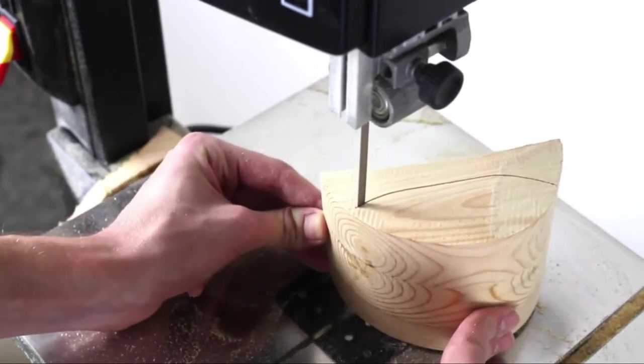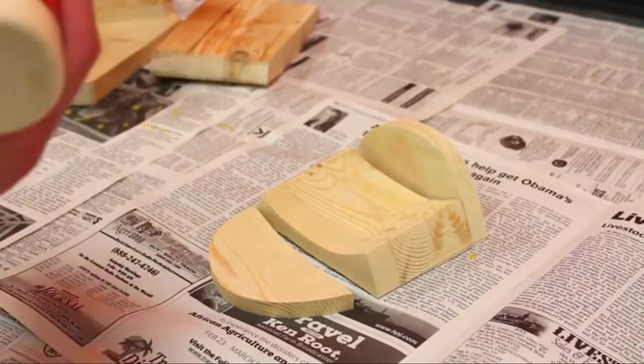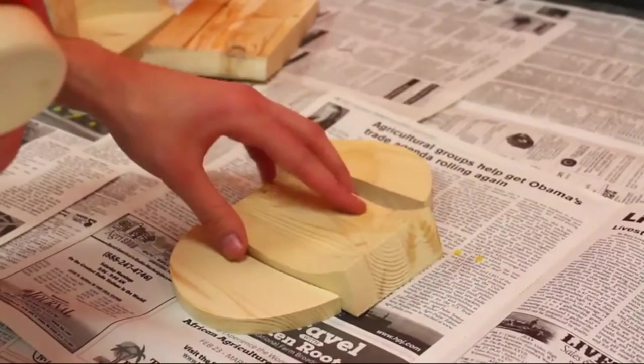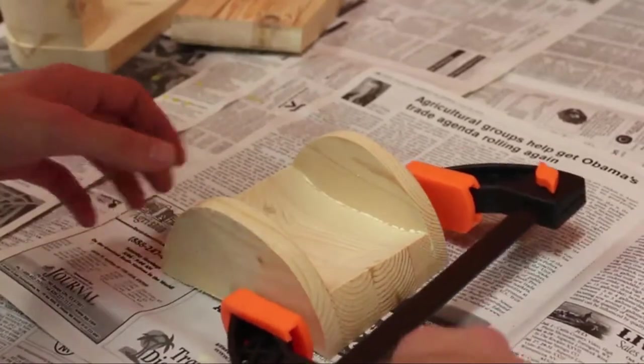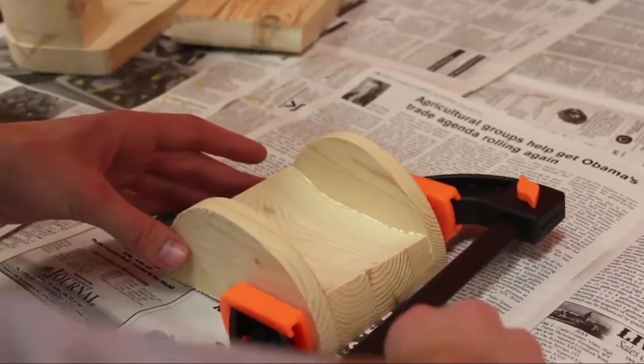Now it's time to glue everything back together. You should have three pieces for your drawer: the front, the back, and the base. Go ahead and use wood glue and clamps to put these back together, leaving out the middle piece in order to leave room for stuff inside your drawer.